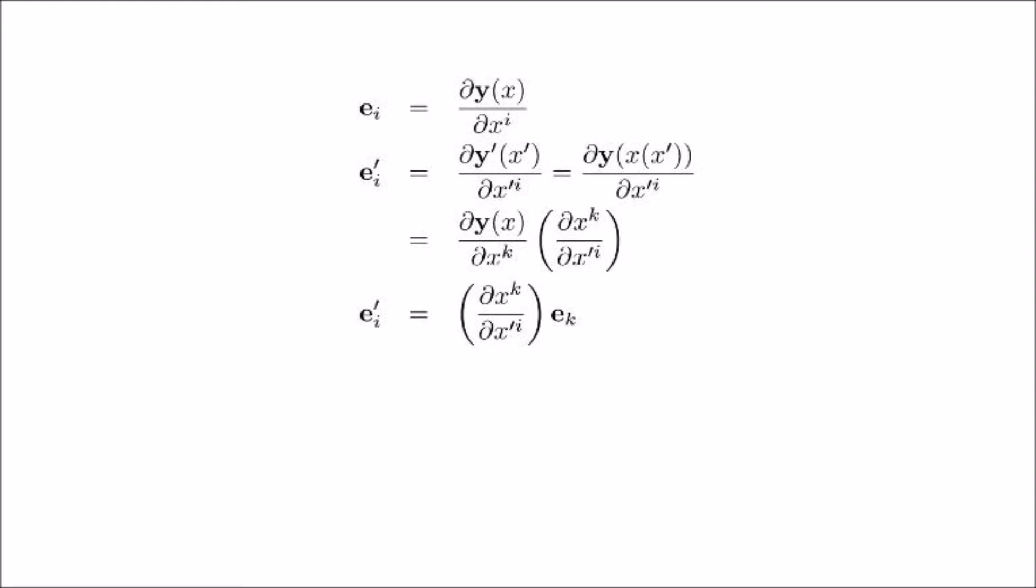We see that the basis are not preserved upon a coordinate transformation. This is not surprising. The basis always point in the direction of the local coordinate axis. So if the direction or scale of the coordinate axis change, so will the basis.